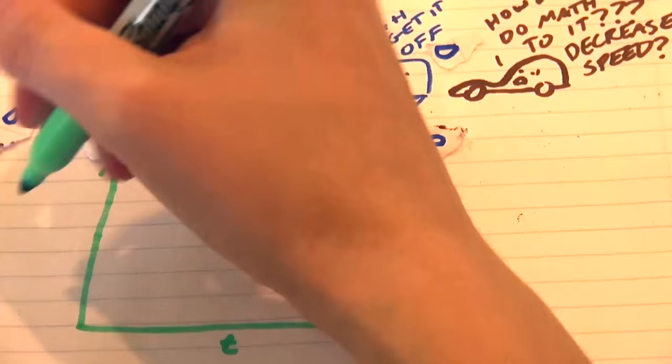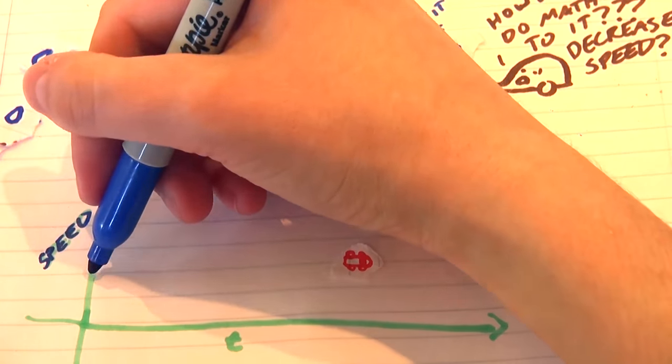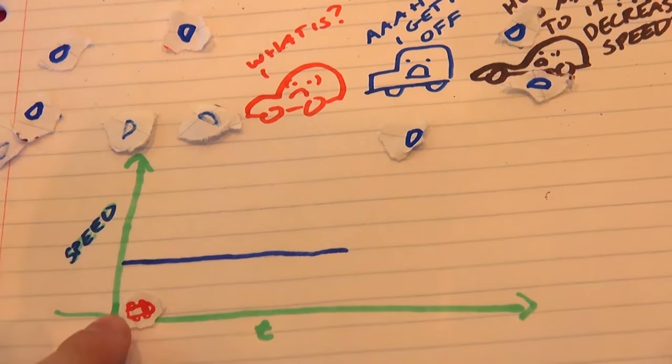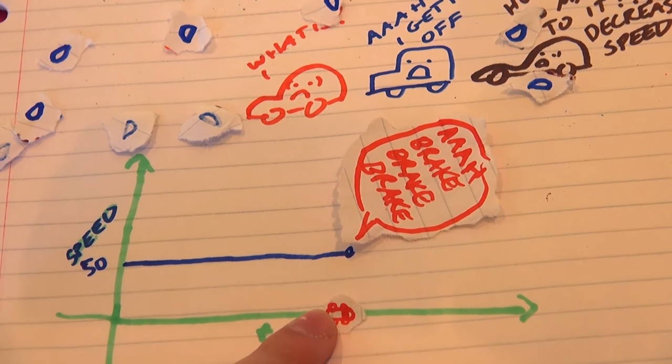It's like this: you're going along at a constant speed. This is time and this is speed, and this line is nice and flat, so no change in speed is occurring. You're just driving 50 miles an hour.